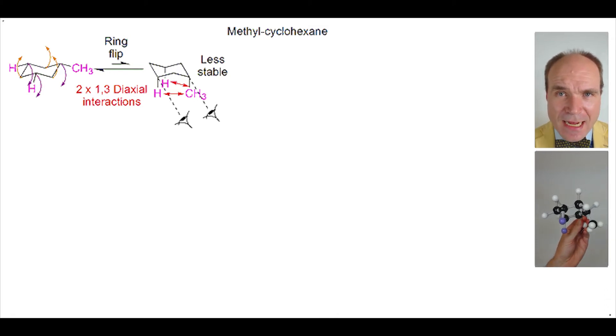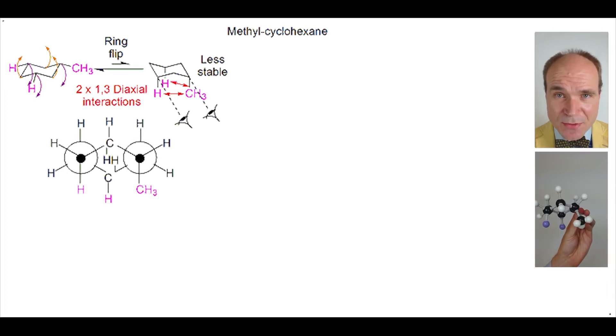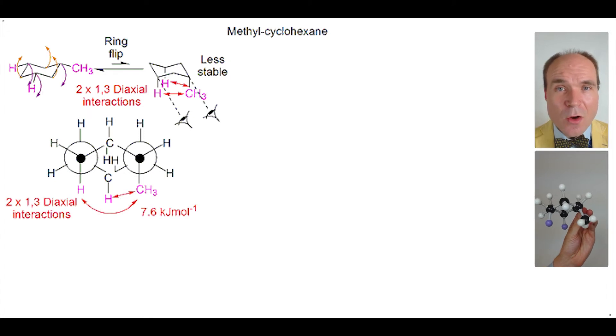Let's take a look at this axial methyl chair conformation from a Newman projection point of view. We can still very clearly see the two 1,3-diaxial interactions.